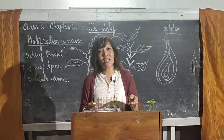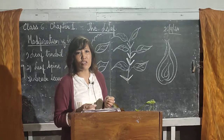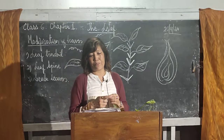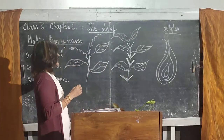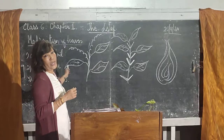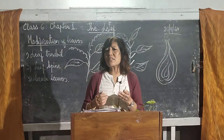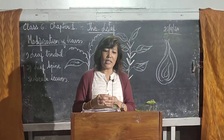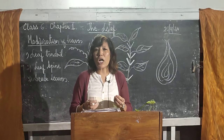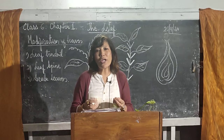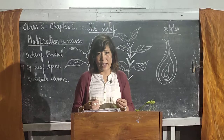You can see this tendril in the pea plant also. The next modification of leaf is the leaf spine. In certain plants, the leaves are modified into a sharp pointed structure called spines.